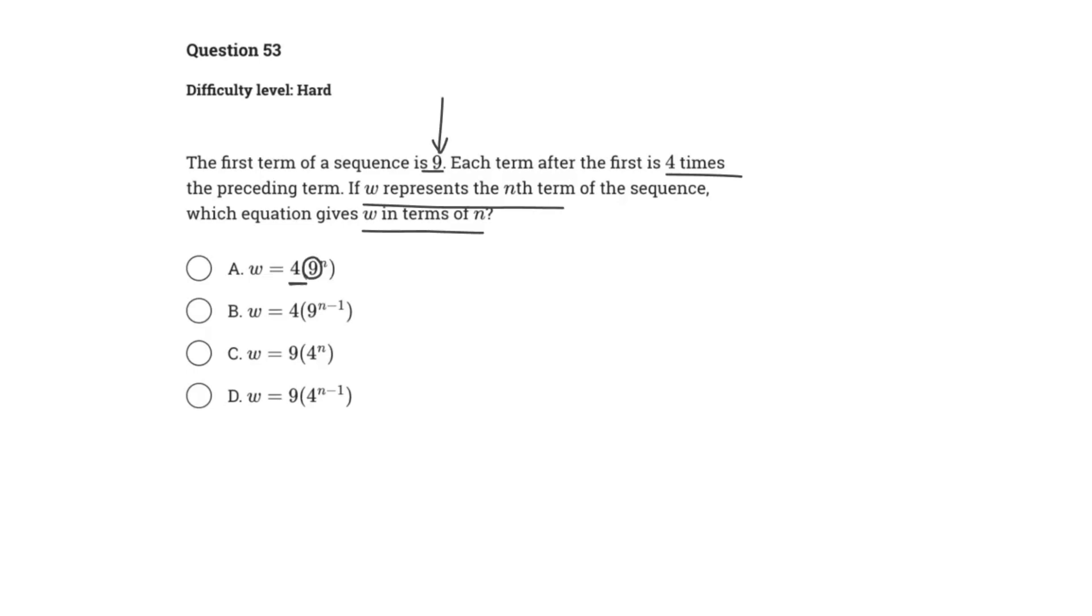Therefore, we can't have that consecutive application of the 4 times preceding term if it is outside the parentheses being squared by n. So it cannot be A and it cannot be B.